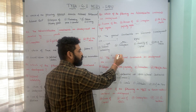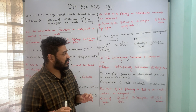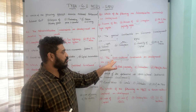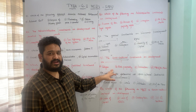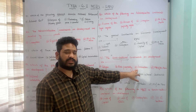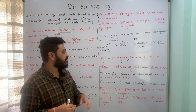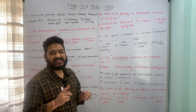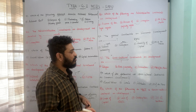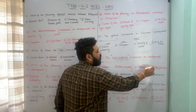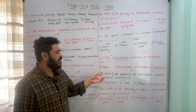The next question asks: what are the socio-cultural constraints on development? The options are: A) religion, B) risk propensity (propensity to take risks), C) innovation, and D) all of the above. All three — innovation, propensity to take risk, and religion — are socio-cultural constraints. Therefore, option D — all of the above — is the correct answer.